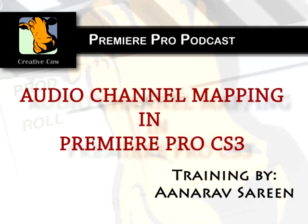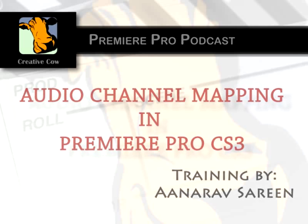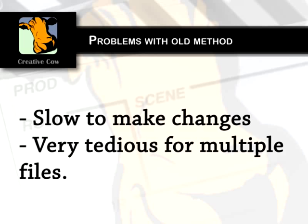Prior to this release, Premiere Pro 2.0 shipped with source channel mappings, which among other things permitted users to split stereo tracks into mono audio tracks for greater audio control. However, that feature was limiting because it was very time-consuming and the process was extremely long.